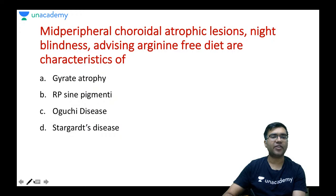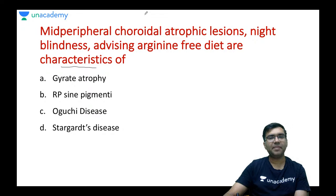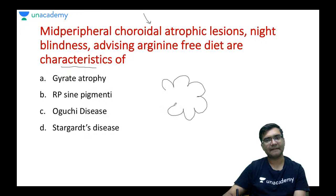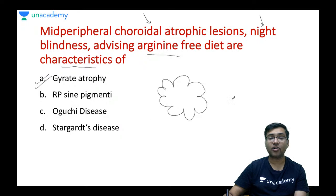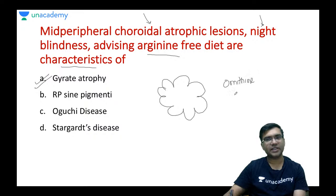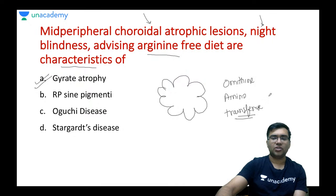MCQ 5: Mid-peripheral choroidal atrophic lesions, night blindness, arginine-free diet advised — which disease? This is gyrate atrophy, caused by deficiency of the enzyme ornithine aminotransferase, leading to arginine accumulation. Treatment includes arginine-free diet and vitamin B6.